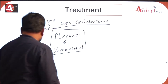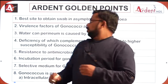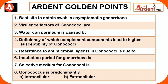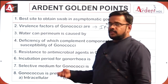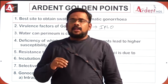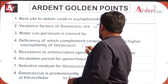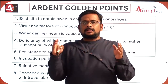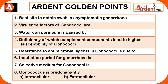Golden points: the best site to obtain a swab in asymptomatic gonorrhea is the endocervical area. Virulence factors are IPLO — IgA1 protease, pili, lipo-oligosaccharide, opacity-associated protein. Water-can perineum is caused by gonococci from periurethral discharge. Deficiency of late complement factors C5 to C9, which form the membrane attack complex, leads to susceptibility to gonococci and meningococci.